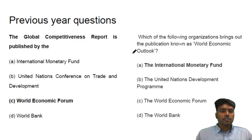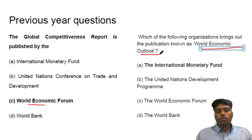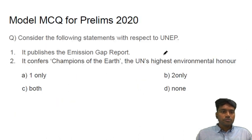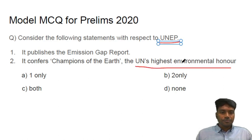UPSC has already asked a few previous year questions on this kind of reports. For example, the Global Competitiveness Report — asked in 2019 — is given by the World Economic Forum. Similarly, World Economic Outlook is given by the IMF. These are important facts to focus on. For the model MCQ: which among the following are true with respect to UNEP? It publishes the Emission Gap Report — yes, we have seen that. It confers Champions of the Earth, which is the UN's highest environmental award — this is also true. These are factual-oriented questions: you either know them or you don't.